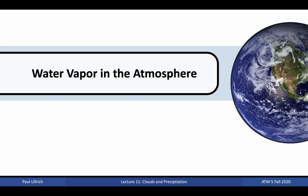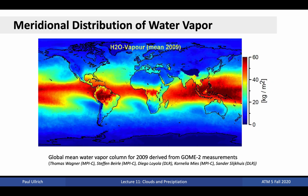Let's begin by discussing where atmospheric water can be found. In last lecture, we learned that warmer air can hold more water vapor. Consequently, it is no surprise that the amount of water vapor in the air follows a roughly analogous pattern to global near-surface temperatures. More water vapor can be found around the equator, and less around the poles. Water vapor can also be found preferentially over the oceans, as the ocean surface provides a ready source of water. In regions of upwelling, where colder ocean waters come from deeper in the ocean, such as off the west coast of the major continents, there is less evaporation and so less water vapor in the air. Over land, water vapor is largely driven by atmospheric dynamics, as water is carried onshore by weather systems.